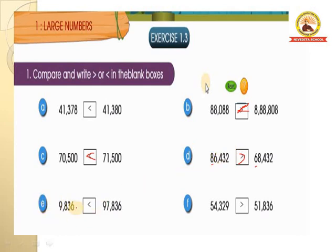Next E: 9,836 is less than 97,836. Here one number has 4 digits and the other has 5 digits, so the 5-digit number is greater. Next, F is your homework children — you should do it yourself.